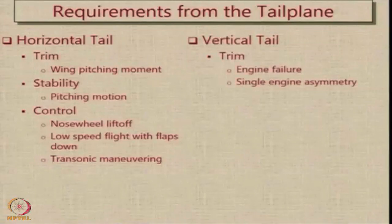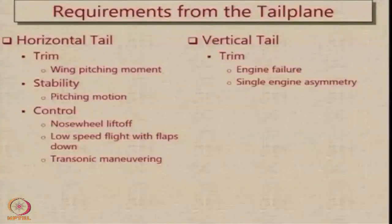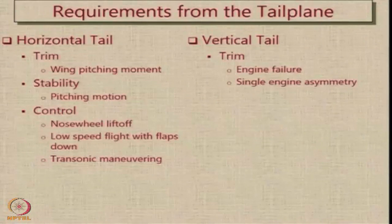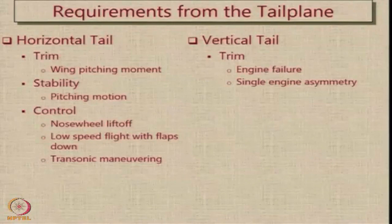As far as the vertical tail is concerned, it is provided from the same three considerations of trim, stability, and control. As far as trimming is concerned, in case one engine fails in a multiple-engine aircraft, the vertical tail is required to give the correct correcting yawing moment so that the aircraft can be flown safely. Also, whenever we have a single-engine nose-mounted aircraft, there is going to be a swirl of air depending on the direction of rotation of the propeller, giving some kind of sideward moment, and to cancel that, the vertical tail is mounted at a slight offset angle.